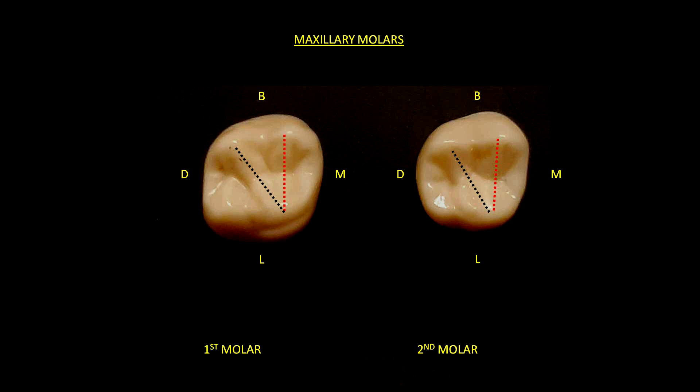Now, as they look so similar, the way to identify the first from the second maxillary molar is by looking at the mesiolingual cusp. The mesiolingual cusp of the first molar has a tubercle which is called the tubercle of Carabelli, which can be considered as a fifth cusp, but it is not functional. The second maxillary molar does not contain the tubercle of Carabelli.